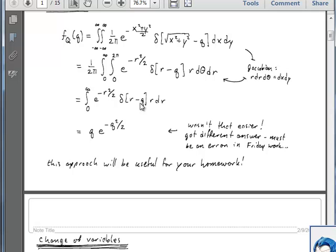So what we're going to do is evaluate this integral by just taking the function that the delta function is multiplied by, and that's r times e^(-r²/2), and replace all the r's with q's. Okay, so q·e^(-q²/2) is the distribution or the probability density as a function of distance q from the center of the dartboard.